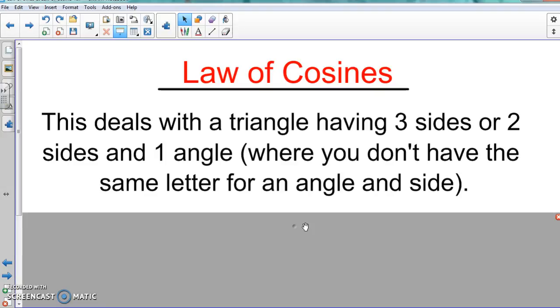So it's not going to be angle A and side a, or angle B and side b, or something like that. It's going to be angle A and then side b and side c, or angle C, side b, and side a. So none of the letters are going to match up. That's when you do the Law of Cosines.